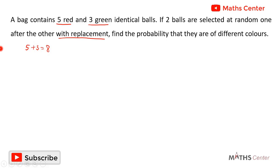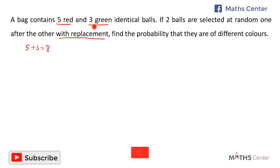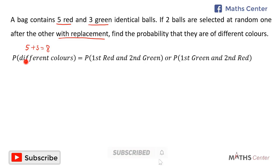Since the balls are selected with replacement, after selecting the first ball we drop it back into the bag and then select the second ball. So at every instance the number of balls in the bag is eight. For the two balls to be of different colors, either the first is red and the second is green, or the first is green and the second is red.